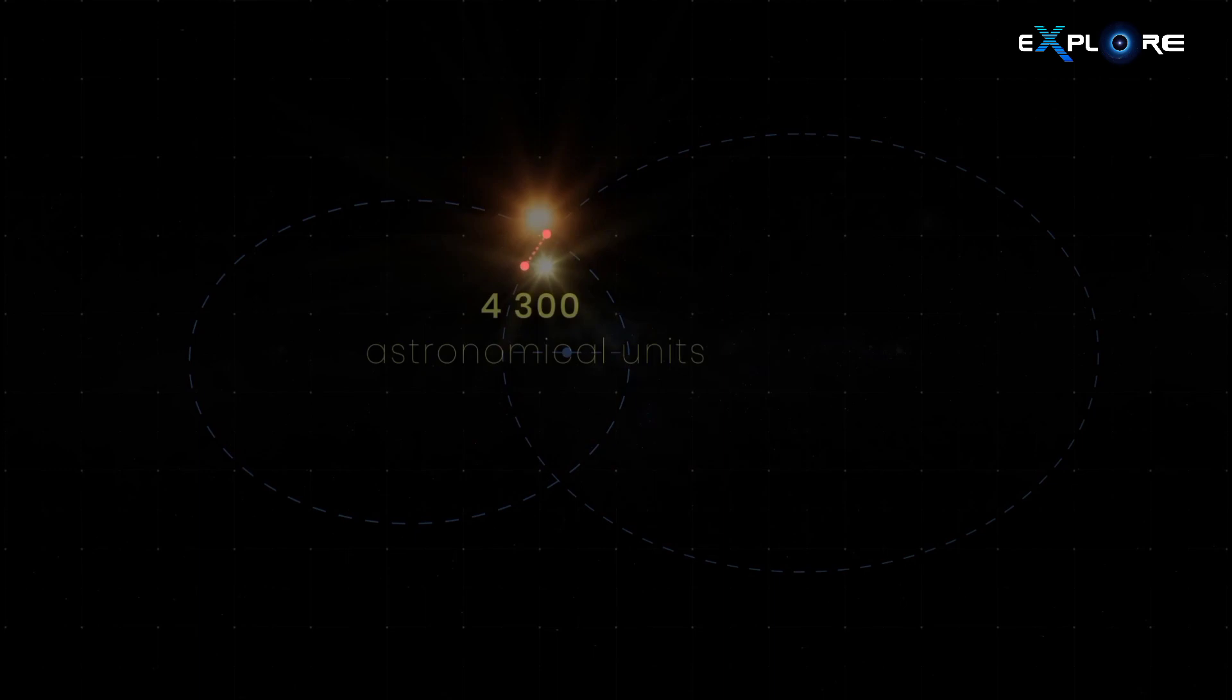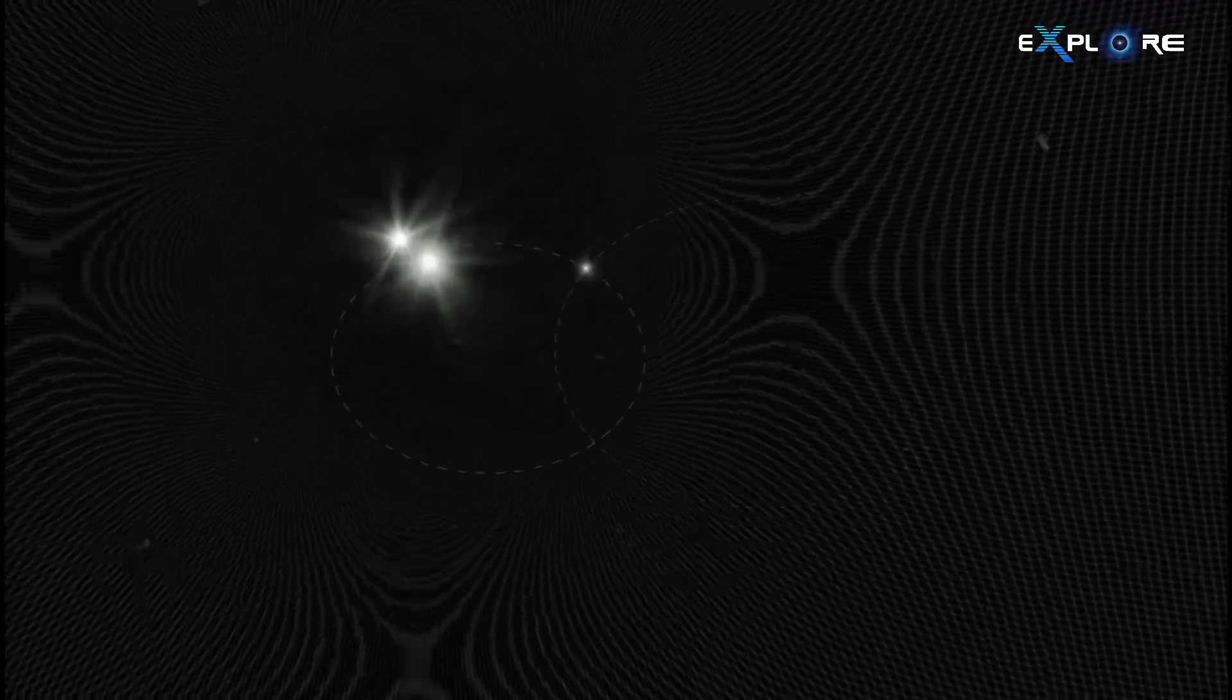Periodically, this red dwarf star approaches the Alpha Centauri pair at a closer distance, a phenomenon attributed to its eccentric orbit. Researchers believe that gravitational interactions in the distant past led to Proxima Centauri's capture by the Alpha Centauri system.